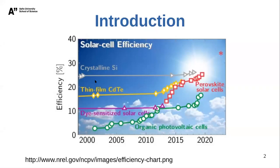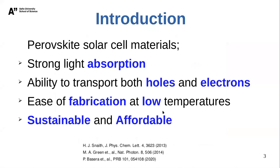Cesium lead triiodide is a perovskite material. Perovskite was discovered around 2010, and within a short time its efficiency increased to almost match that of crystalline silicon, the most efficient solar cell material. Aside from efficiency, perovskite materials have strong light absorption, the ability to transport both electrons and holes, are easy to fabricate at low temperatures, are sustainable, and above all, very affordable.